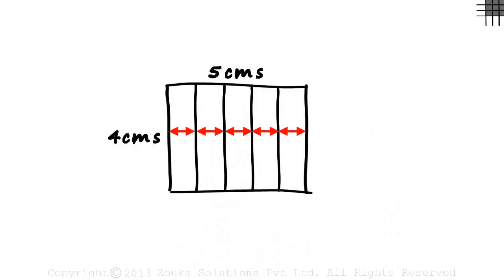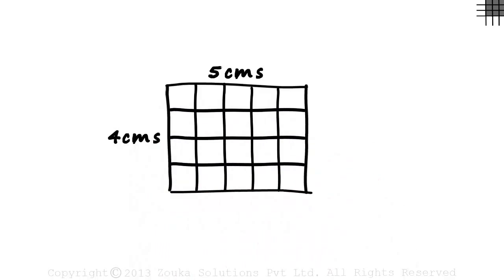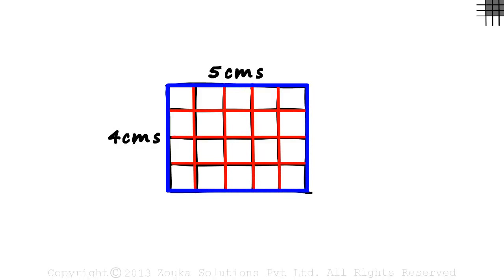Distance between any two adjacent vertical lines is 1 centimeter. And we split 4 centimeters into rows of 1 centimeter each. So we draw 3 lines like these. Even the distance between any two adjacent horizontal lines is 1 centimeter. We haven't done anything special. We have just drawn lines within the figure. And what we got is 20 small squares of side 1 centimeter each.